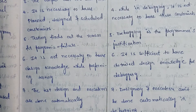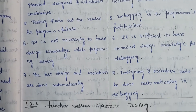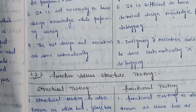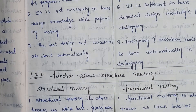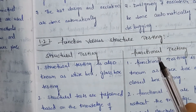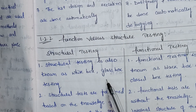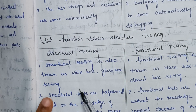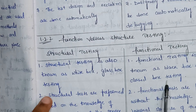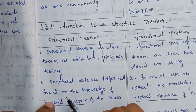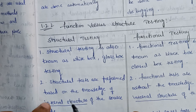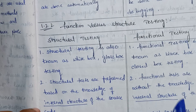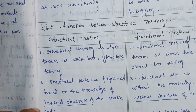Next one is functional versus structural testing. Structural testing is also known as white box or glass box testing. Functional testing is also known as black box or closed box testing. Structural testing is performed based on the knowledge of the internal structure - if you know the source code and the internal structure. Functional testing is performed without knowledge of the internal structure.